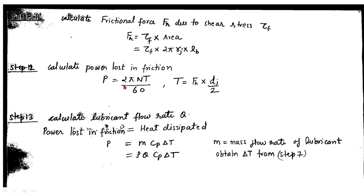Step number twelve: calculate the power lost in friction using the formula P = 2πnT / 60, where n is the rpm and T is the frictional torque. Step number thirteen: equate the power lost in friction to the heat dissipated to find the lubricant flow rate. Power P = rho × Q × cp × delta_T, where delta_T is the temperature rise from step seven, giving us the lubricant flow rate Q.